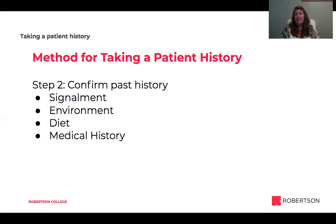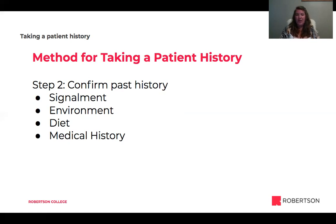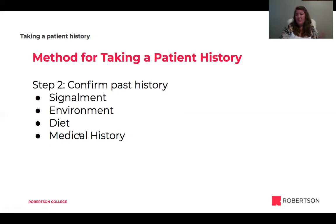Our second step is to confirm the past history. I'll review the file and confirm the signalment, the environment, the diet, and the medical history — all those things we talked about earlier. If they're a new patient, I might need to gather that information. If they're an existing patient, I might already have it. It's still a good idea to double-check, since things like environment, diet, or medical history may have changed — maybe they went to an emergency hospital and we weren't notified.